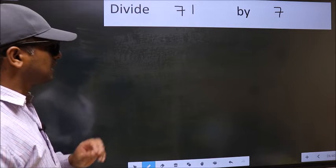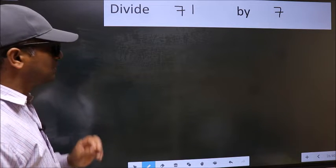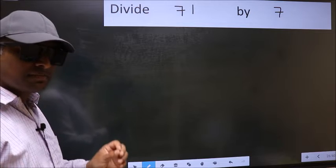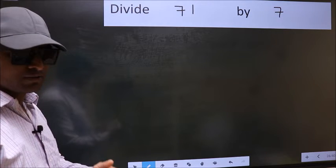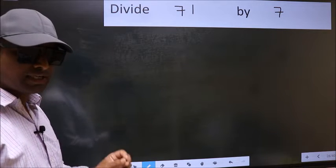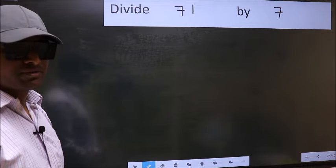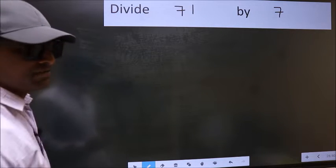Divide 71 by 7. While doing this division, many do this mistake. What is the mistake that they do? I will let you know. But before that, we should frame it in this way.